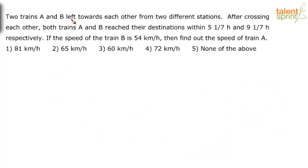The question says two trains A and B left towards each other from two different stations. After crossing each other, now this is an important point, after crossing each other both trains A and B reach their destinations within 5 1/7 hours and 9 1/7 hours respectively.